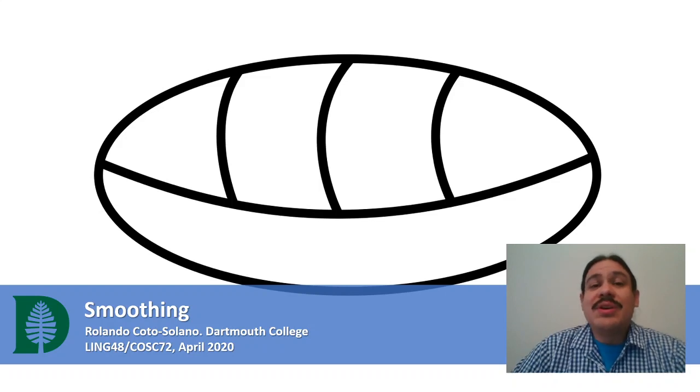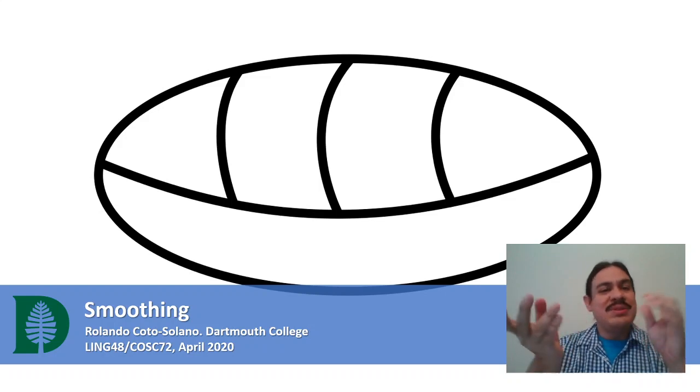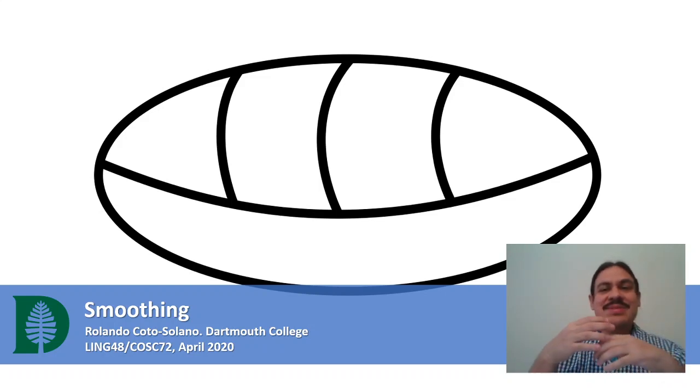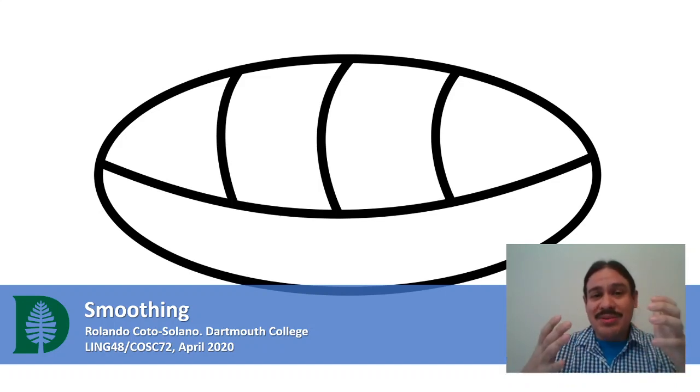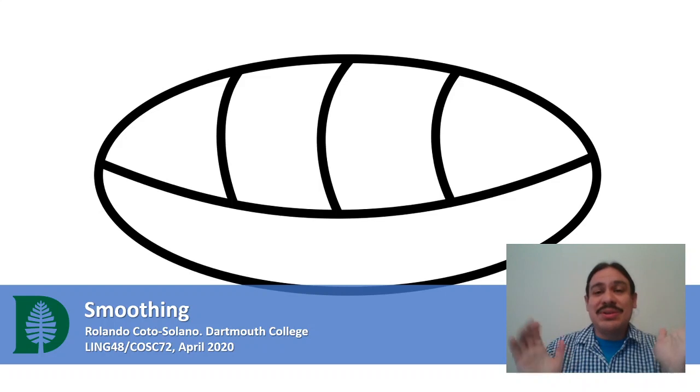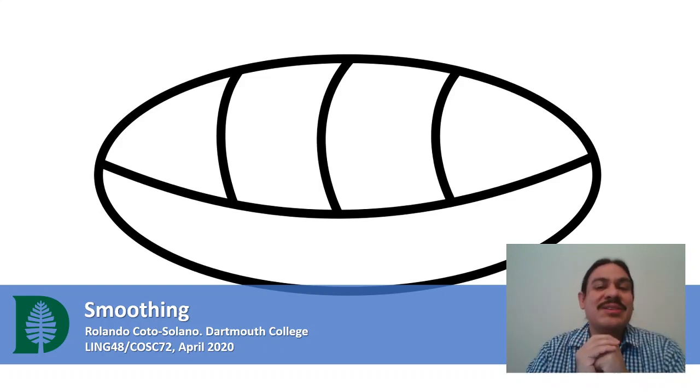In this week's videos, we've been looking at n-gram models of language. N-grams calculate probabilities for words, for bigrams, and even entire sentences. In this video, we're going to deal with zeros in our n-gram models. We're going to give them all a little boost, and this will help us calculate the probability of sentences we have never seen before.